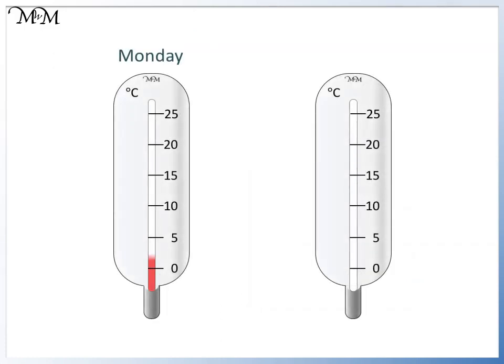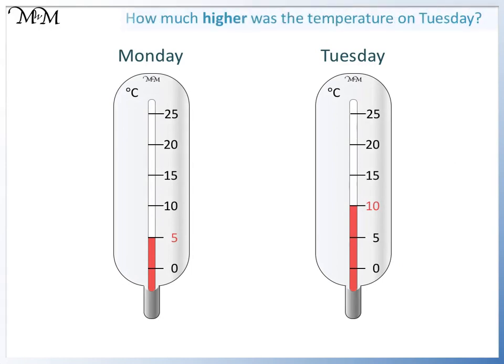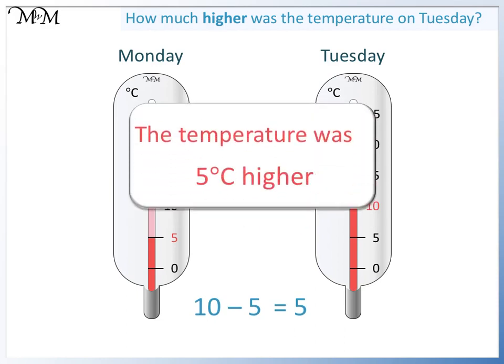The temperature on Monday was 5 degrees C and the temperature on Tuesday was 10 degrees C. How much higher was the temperature on Tuesday? To work this out, we need to find the difference between 5 and 10. We can do this by counting on from 5 or by finding 10 take away 5. 10 take away 5 equals 5, so the temperature was 5 degrees C higher on Tuesday.